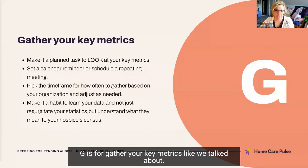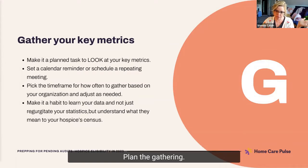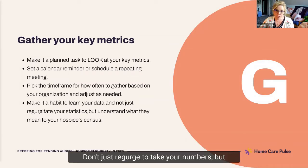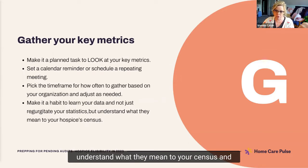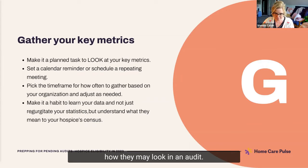G is for gather your key metrics, like we talked about — plan the gathering and make it a habit. Don't just regurgitate your numbers, but understand what they mean to your census and how they may look in an audit.